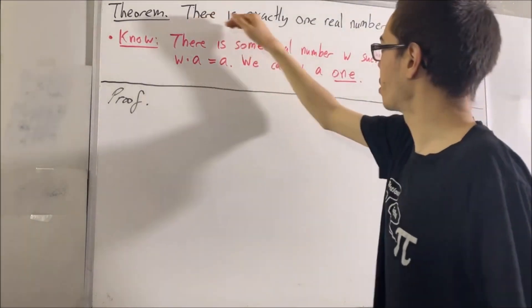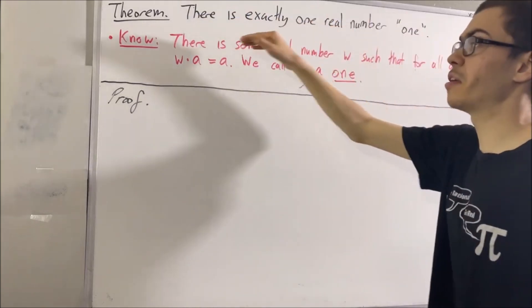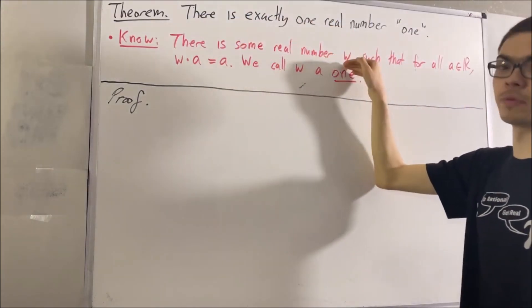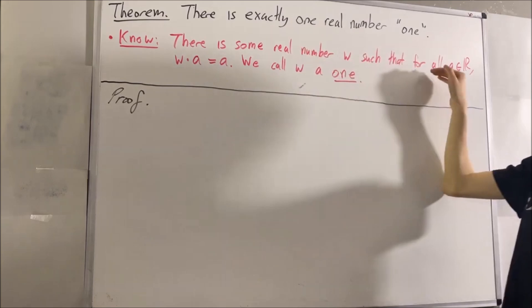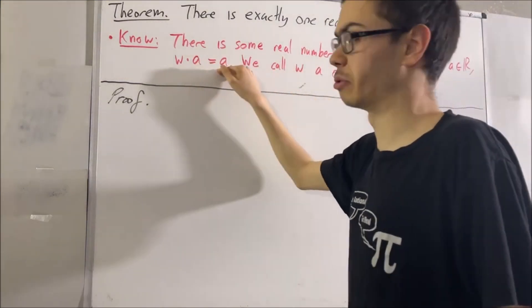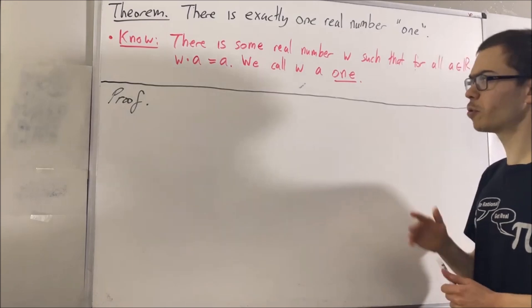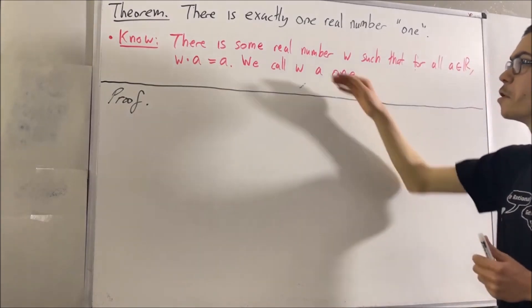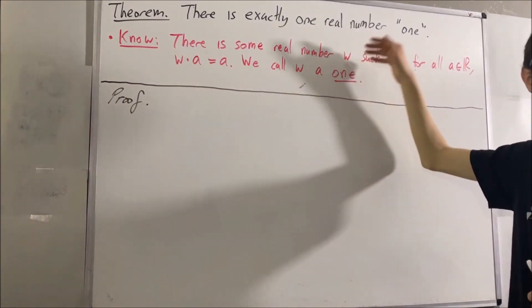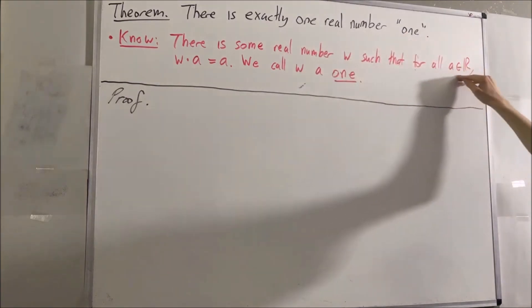But what we're really trying to prove here is that there is exactly one real number w that satisfies: for all real numbers a, w times a is equal to a. And so to prove that, suppose we have two real numbers w and w prime that satisfy this statement.